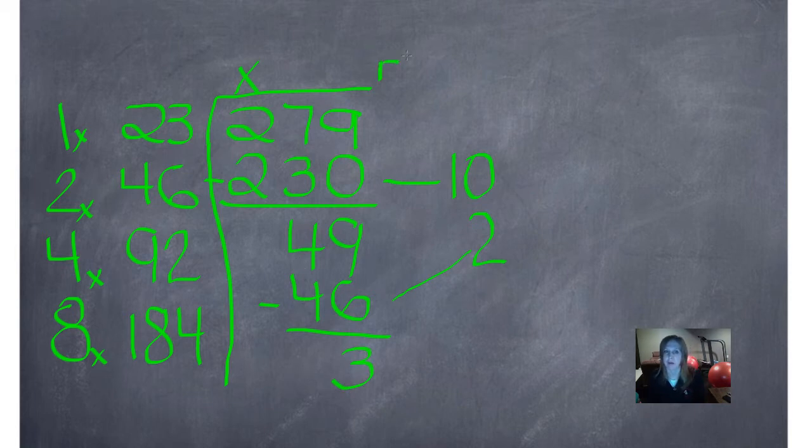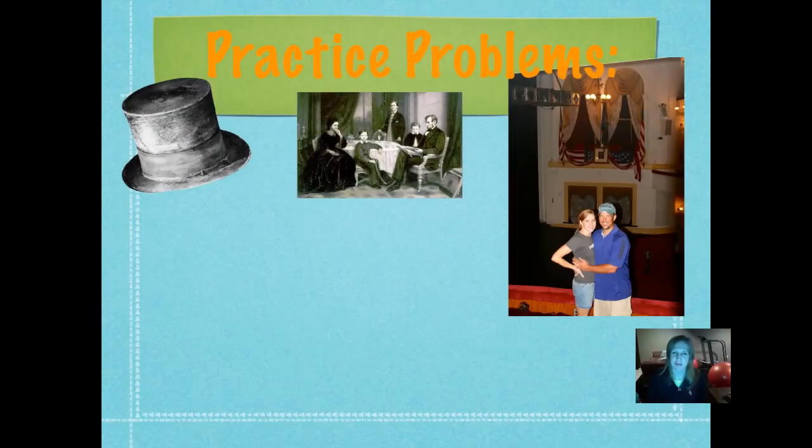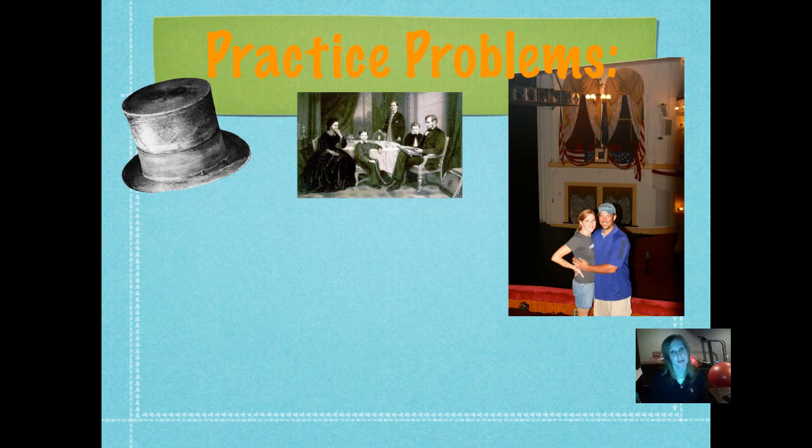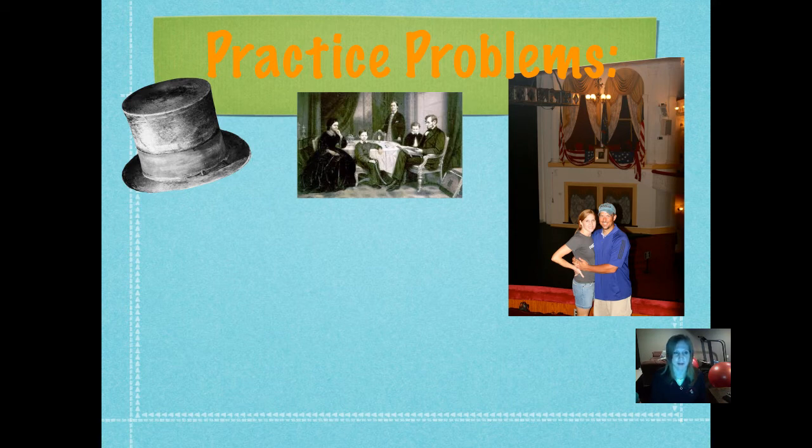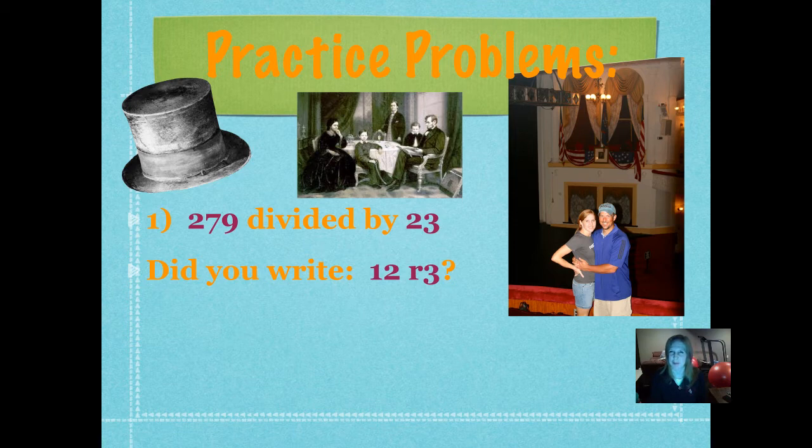Nothing will go into 3. So we have a remainder of 3 and to find our quotient we'll add 10 plus 2 which is 12. So 12 is our quotient and to check we multiply 12 times 23 and get 276 and add our remainder of 3 which gives us 279. Make sure you write that out. And that is a picture of the Lincoln family and Abraham Lincoln's top hat and that's a picture of Mr. Gooding and I were in Ford's Theater where Abraham Lincoln was killed. We went to Washington D.C. It was a really fun trip. So there's a picture of Mr. Gooding and I at Ford's Theater. That's where Abraham Lincoln was killed. But it was a really neat trip to take to Washington D.C. and get to be in that place where he was. There's his top hat there too.